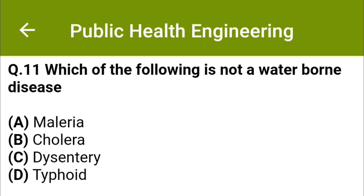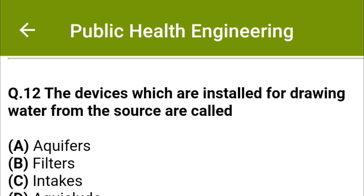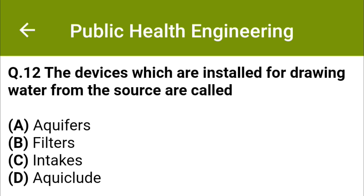Which of the following is not a waterborne disease? Option A: malaria, option B: cholera, option C: dysentery, option D: typhoid. The correct answer is option A: malaria. The devices which are installed for drawing water from the source are called: option A: aquifers, option B: filters, option C: intakes, option D: articulate. The correct answer is option C: intakes.